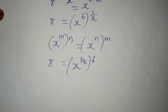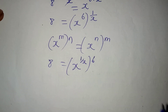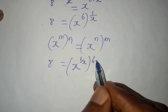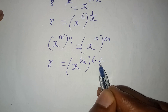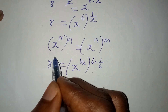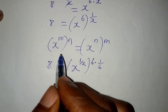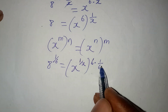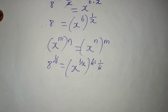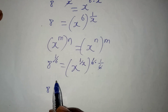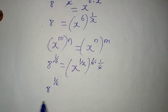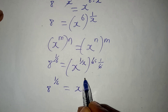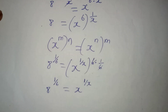Now, I'm going to remove this 6 by multiplying this side by 1 over 6 and raising the left-hand side to 1 over 6. This cancels, and we have 8 to the power of 1 over 6 equal to x to the power of 1 over x.